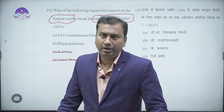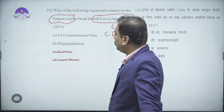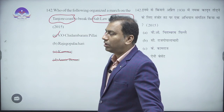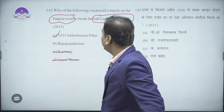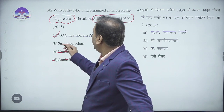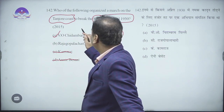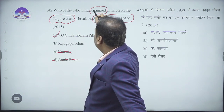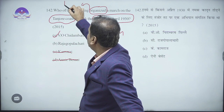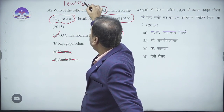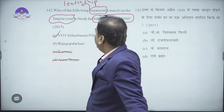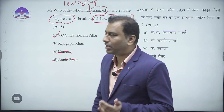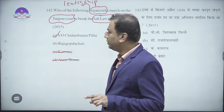Coming to Rajagopalachari — he is the correct answer here. He was not merely a participant but the actual organizer of the Salt March on the Tanjore coast. The question asks 'who organized' — and the evidence points clearly to Rajagopalachari.